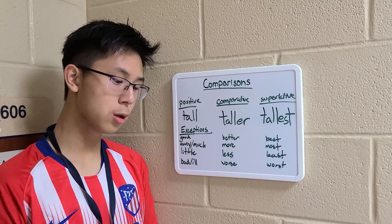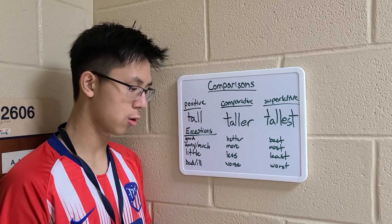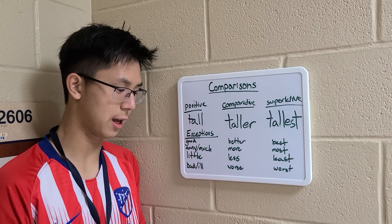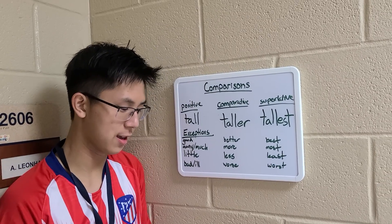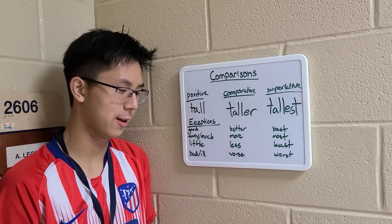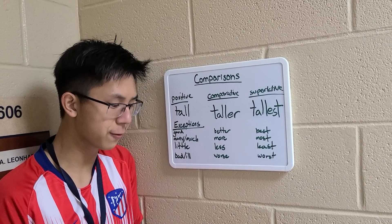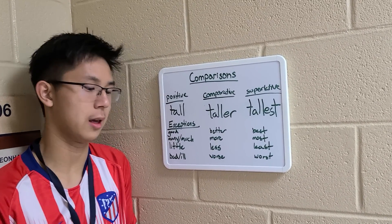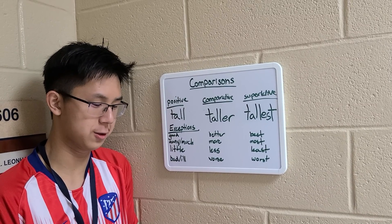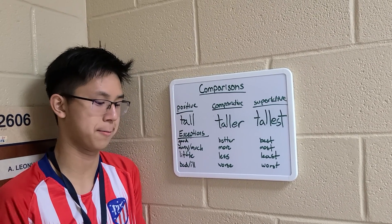If you have a two-syllable word, you will generally add -er or -est, unless it makes the word sound really awkward. In that case, you would add the word more or most to the word. An example is the word careful. Careful is two syllables, but adding -er to careful makes carefuller, which doesn't sound right, so you would use more careful instead.